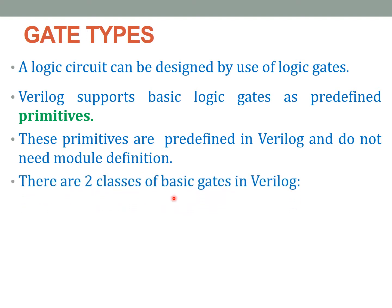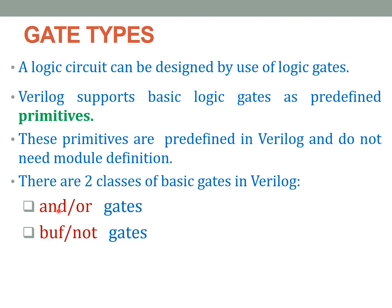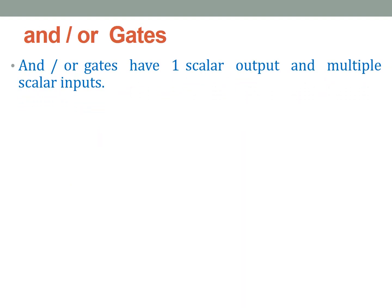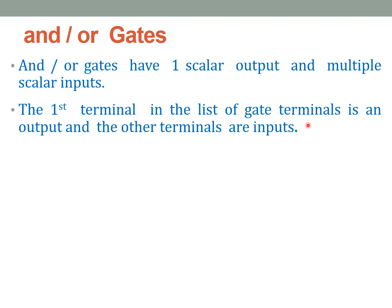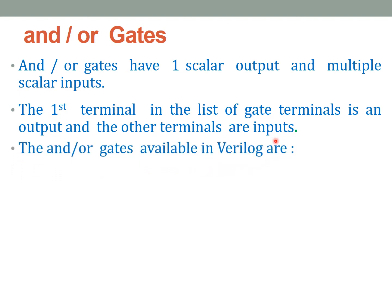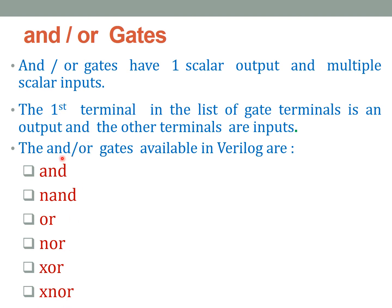There are two classes of basic gates in Verilog. The first class is the AND/OR gates, and the second class is the buff/NOT gates — the buffer and NOT gates. The AND/OR gates can have one scalar output but multiple scalar inputs. When instantiating a gate primitive, the first terminal must always be the output, and the rest are input terminals. The AND/OR gates available in Verilog are: AND, NAND, OR, NOR, XOR, and XNOR.